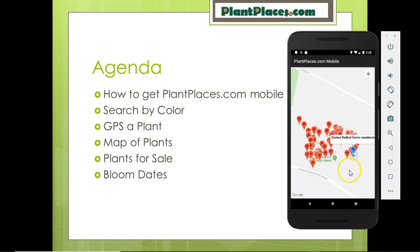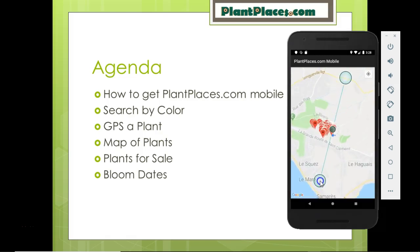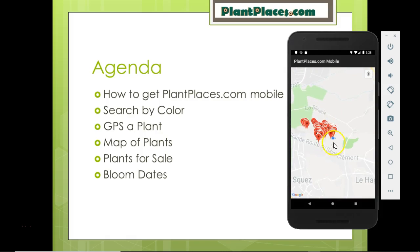Here you can see an example of a botanical garden populated with many mapped PlantPlaces.com plants, along with the plant we just mapped ourselves. This has been a look at PlantPlaces.com Mobile and its key features. It's also capable of submitting plants for sale to PlantPlaces.com and submitting bloom dates — we'll cover those in a separate video. This covered the major features of Search by Color, GPS a Plant, and Map of Plants. I hope you find this app useful, and I look forward to hearing your comments. Thank you.